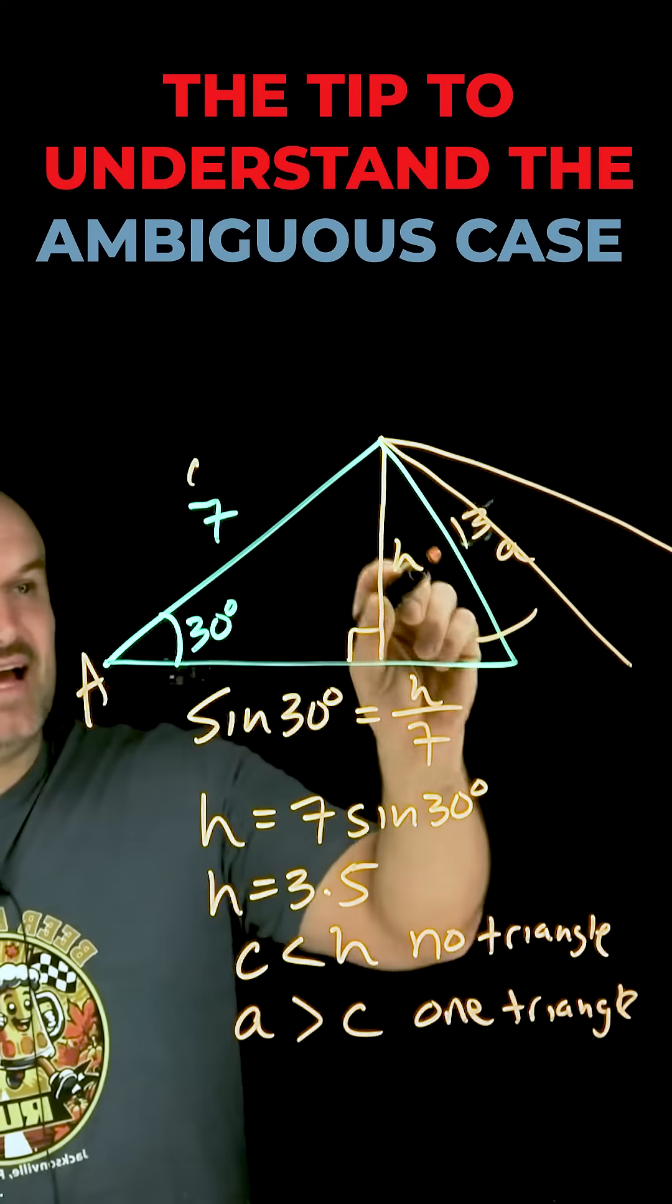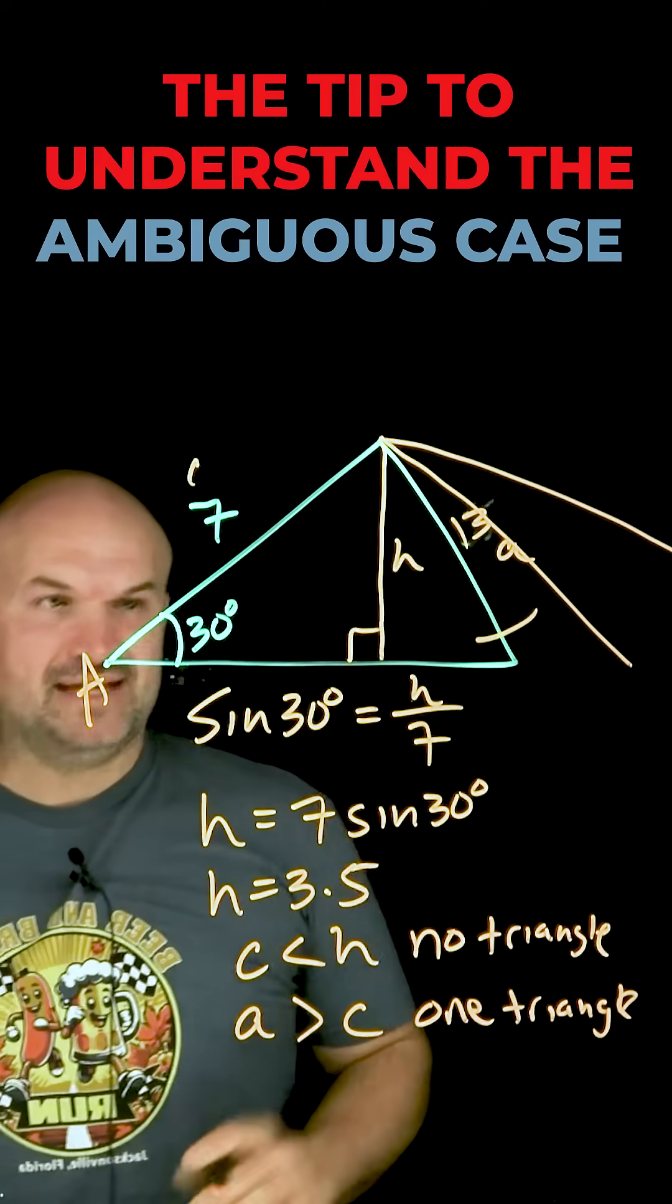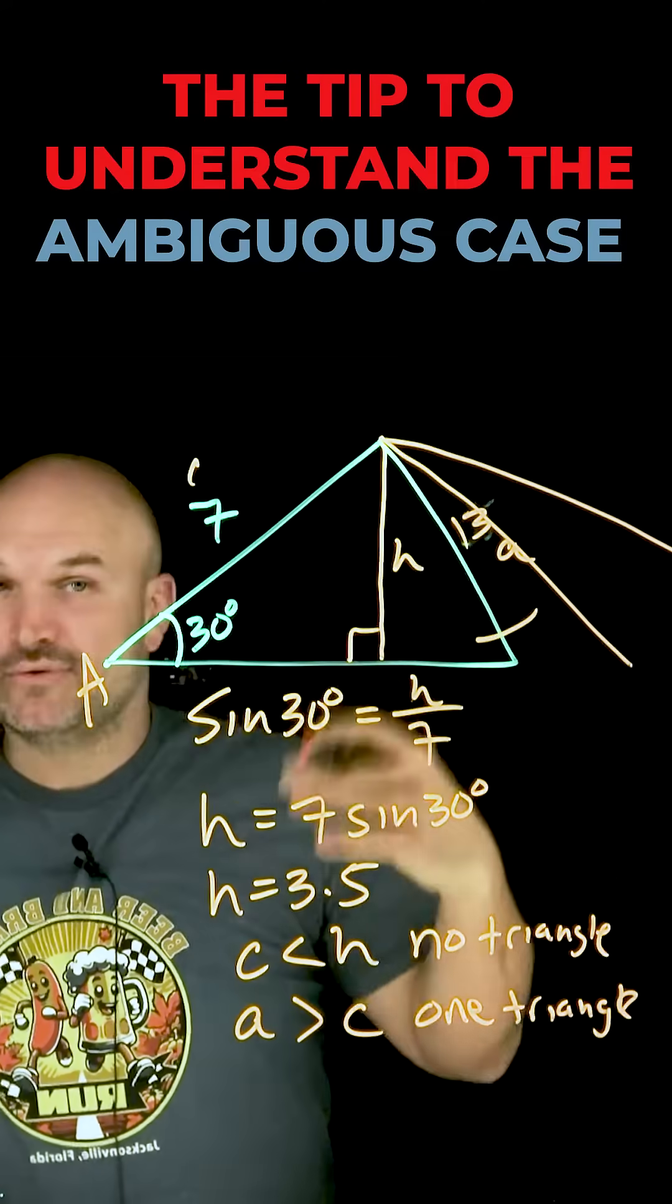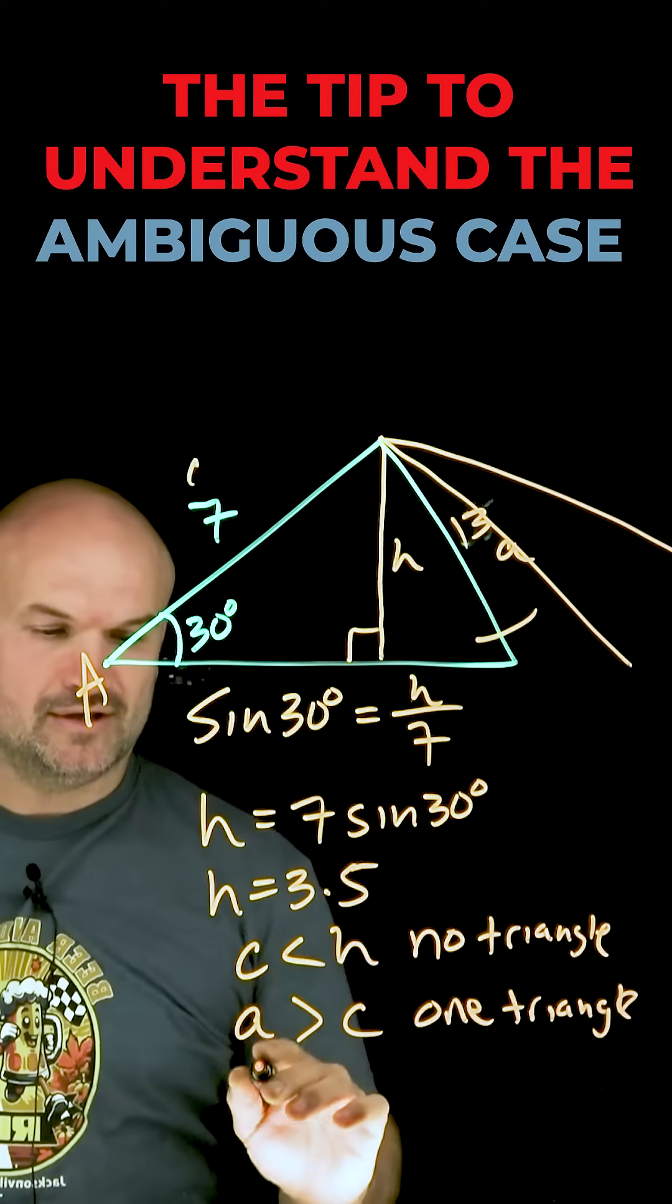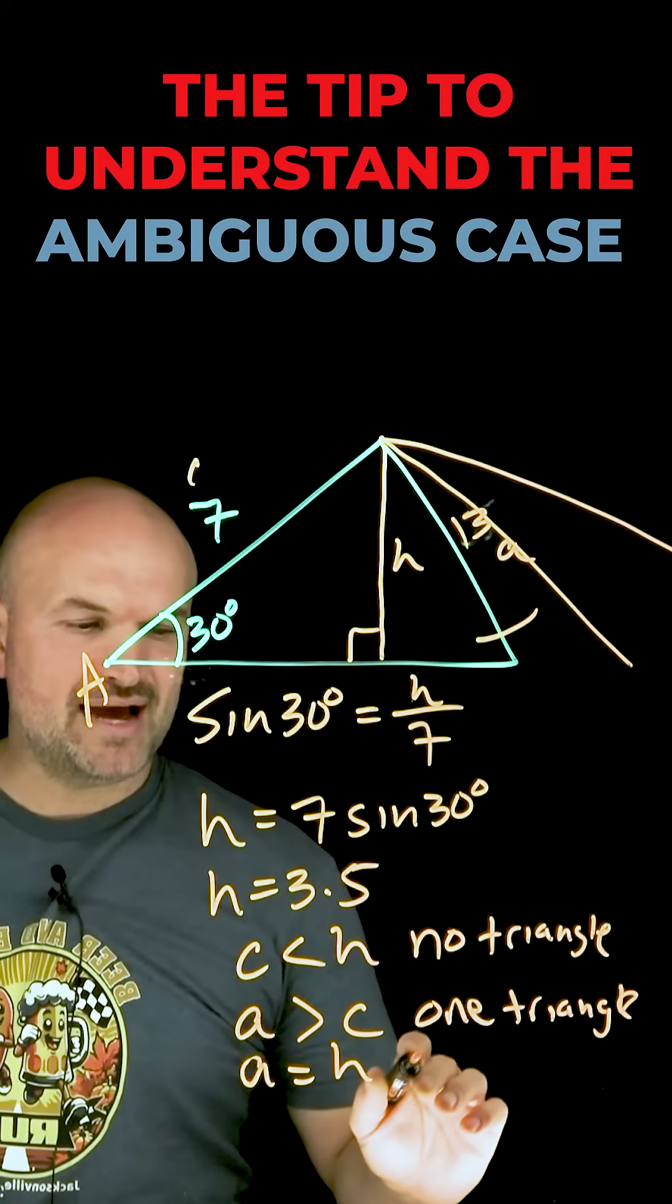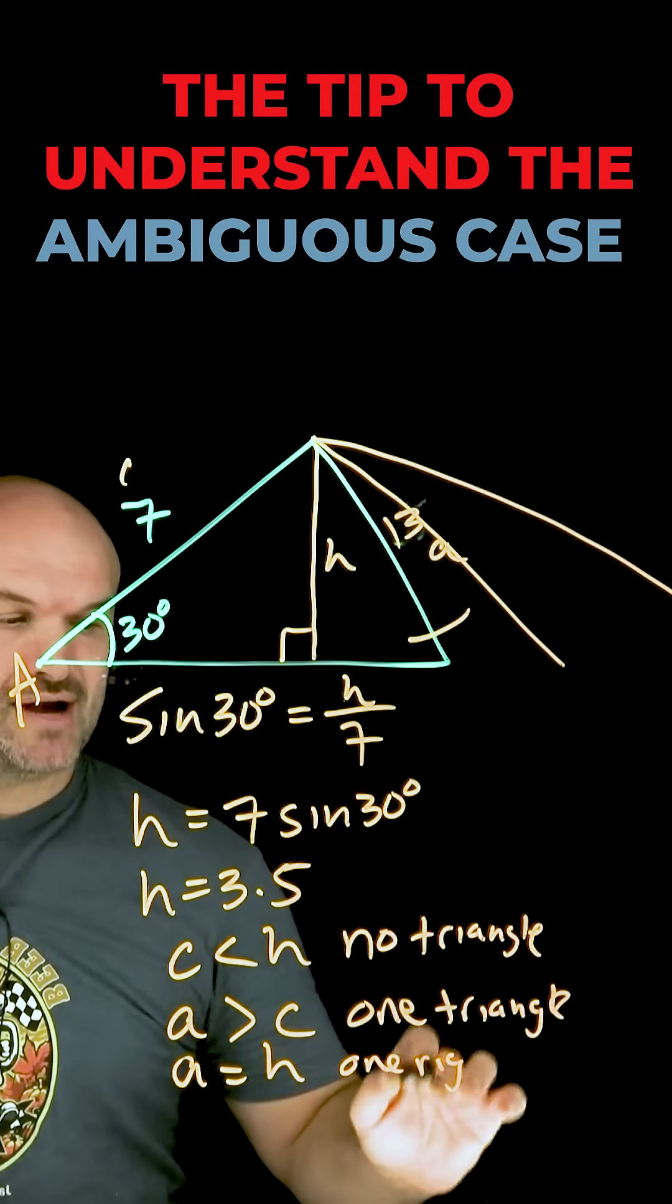Now, obviously, if my A was equal to my H, that means my A was actually a 3.5, then it would be the height of the triangle, and I would have a right triangle. So when A equals your H, I'm going to have one right triangle.